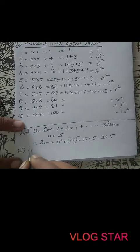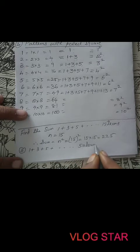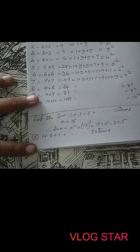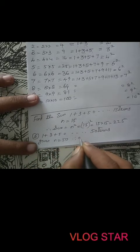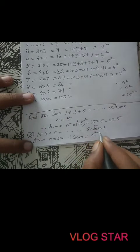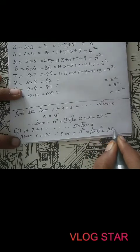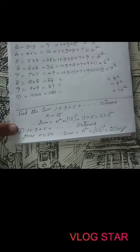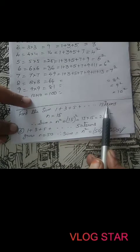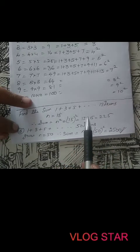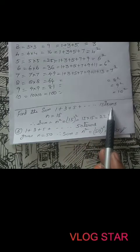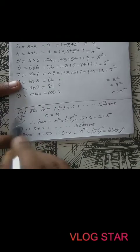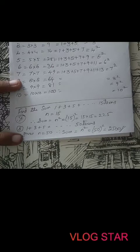Suppose they give you: sum of 1 plus 3 plus 5 up to 50 terms. In an exam, you cannot sit and write 1 plus 3 plus 5 plus 7 all the way up to 50 terms. So here, given N equals 50, therefore sum equals N squared equals 50 squared equals 50 times 50 equals 2500. These sums will come in your MCQs — they give you the sum of a series up to N terms and ask you to find the sum. How many terms are given? That N squared is your answer.